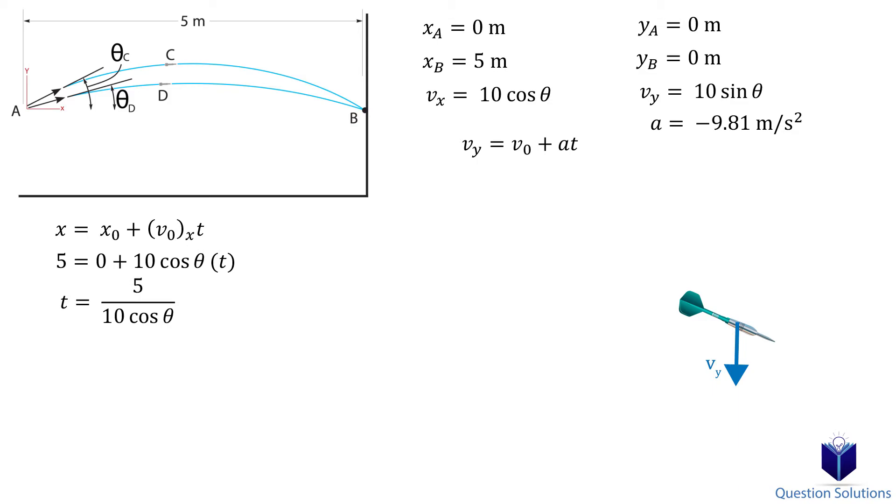In other words, at the start, the initial velocity in the vertical direction is 10 sin theta, but at the end, the final velocity in the vertical direction is actually negative 10 sin theta. So let's substitute those values in.